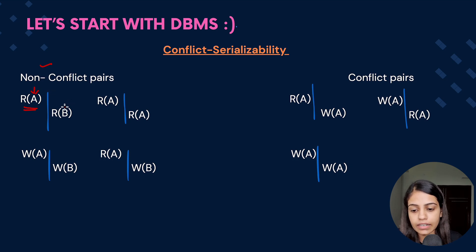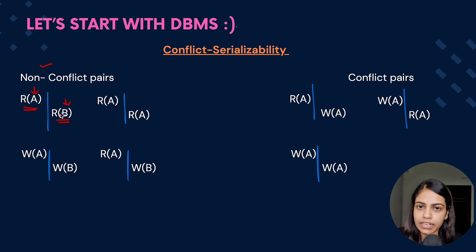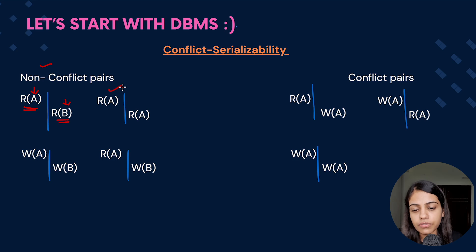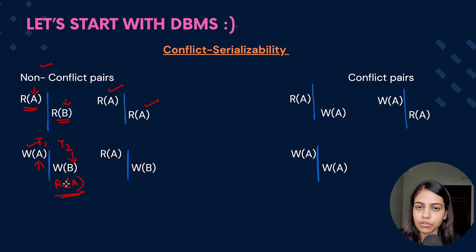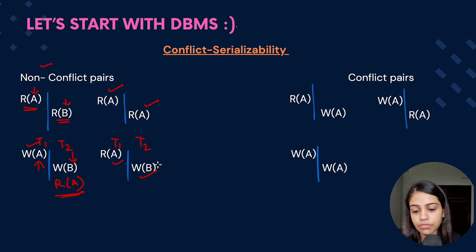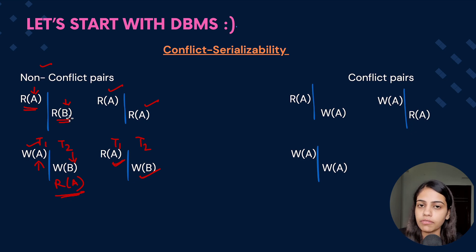Why are these non-conflict pairs? If I am reading data item A and as part of another transaction reading data item B, there is no conflict because we are only reading — not reading any modified value or updating any value. Read-read on the same item also causes no inconsistency. Write-write on different data items is non-conflicting too, because writing to A and writing to B involve separate data items. If the data items are different and there is no write operation on the same item, there is no conflict.